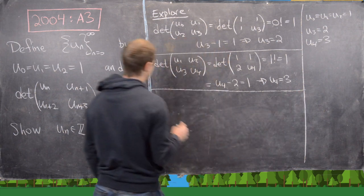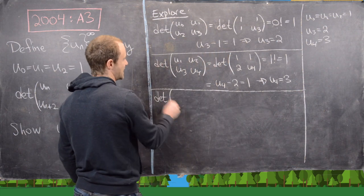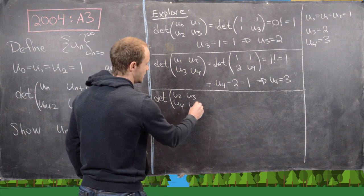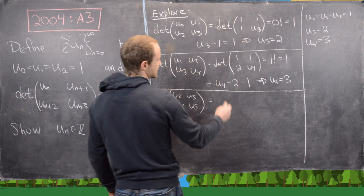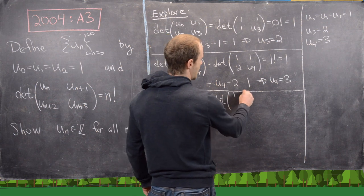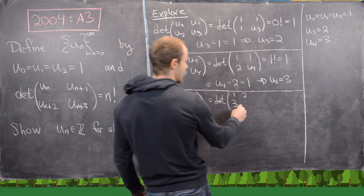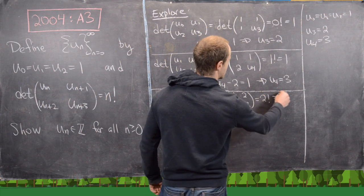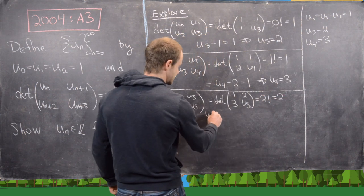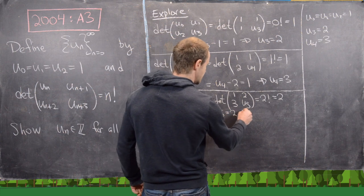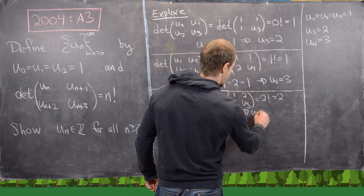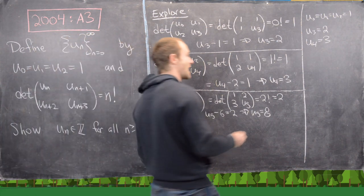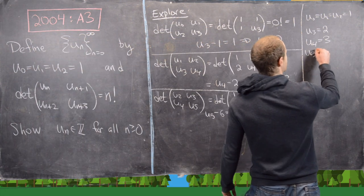Let's work out another one. The determinant of [u_2, u_3; u_4, u_5] equals the determinant of [1, 2; 3, u_5], and that needs to equal 2 factorial = 2. So u_5 − 6 = 2, giving u_5 = 8. Let's add that: u_5 = 8.